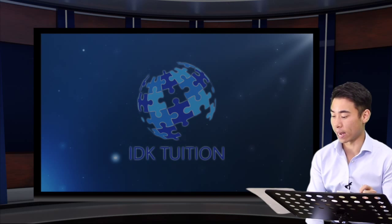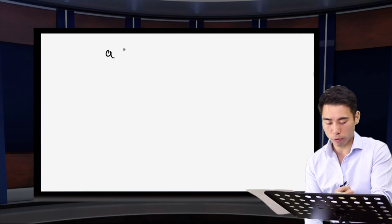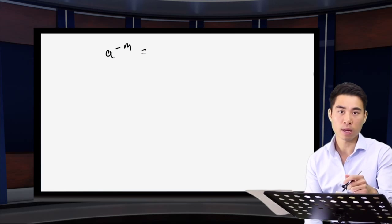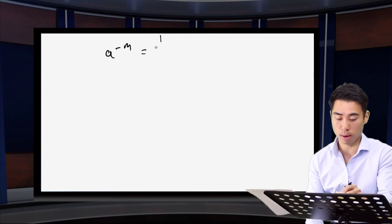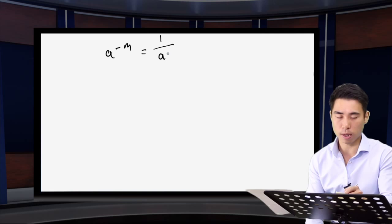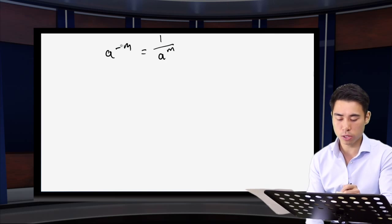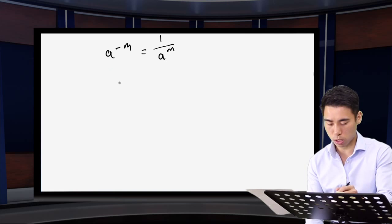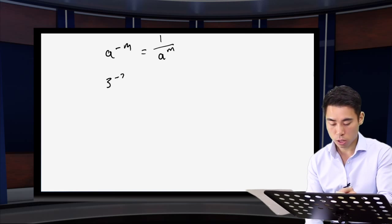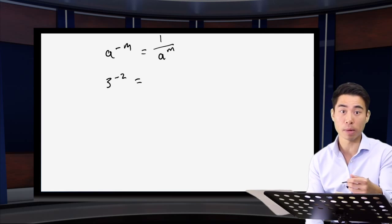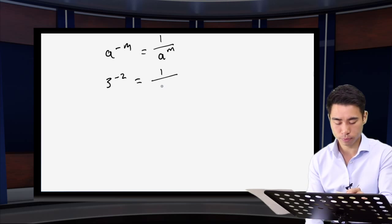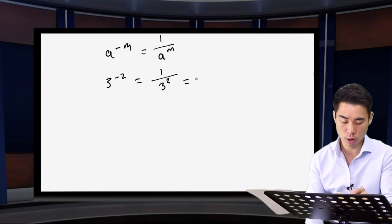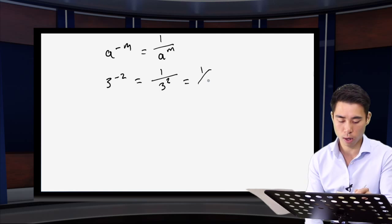Moving on to negative indices. The general rule: if I have something raised to a negative power, it's always going to be one over something — always think of it as one over. The negative sign disappears, and the power is always positive. So if I have three to the power of minus two, negative power means one over: one over three to the two, which is one over nine.